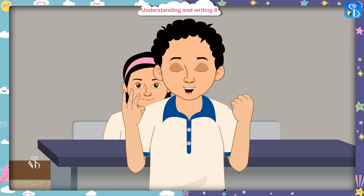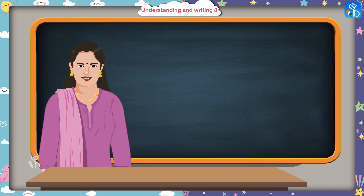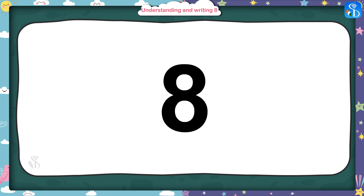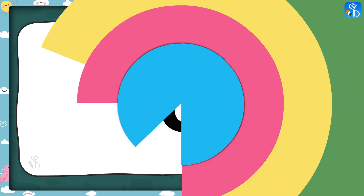Madam: 1, 2, 3, 4 and 5, 6, 7, 8. Correct. Now tell me, how does the number 8 look like? It looks like one circle is placed on the other circle. Correct.